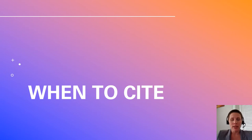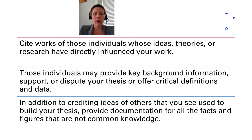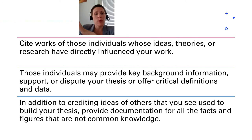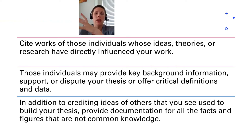When to cite: we want to cite works of those individuals whose theories, ideas, or research have directly influenced our work. We also want to cite those individuals who may provide key background information, support, or dispute our thesis, or offer critical definitions. Remember, it is key to not omit people who disagree with you — that doesn't make sense in a research paper. The whole point is to explore all available information and see how you can support your theory, even with those who disagree with you.